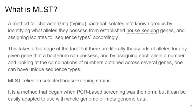Multilocus sequence typing is a characterization or typing method for bacterial isolates. It allows us to place them into known groups by identifying what alleles they possess from a set of established housekeeping genes, and then taking advantage of that information to assign them a sequence type.